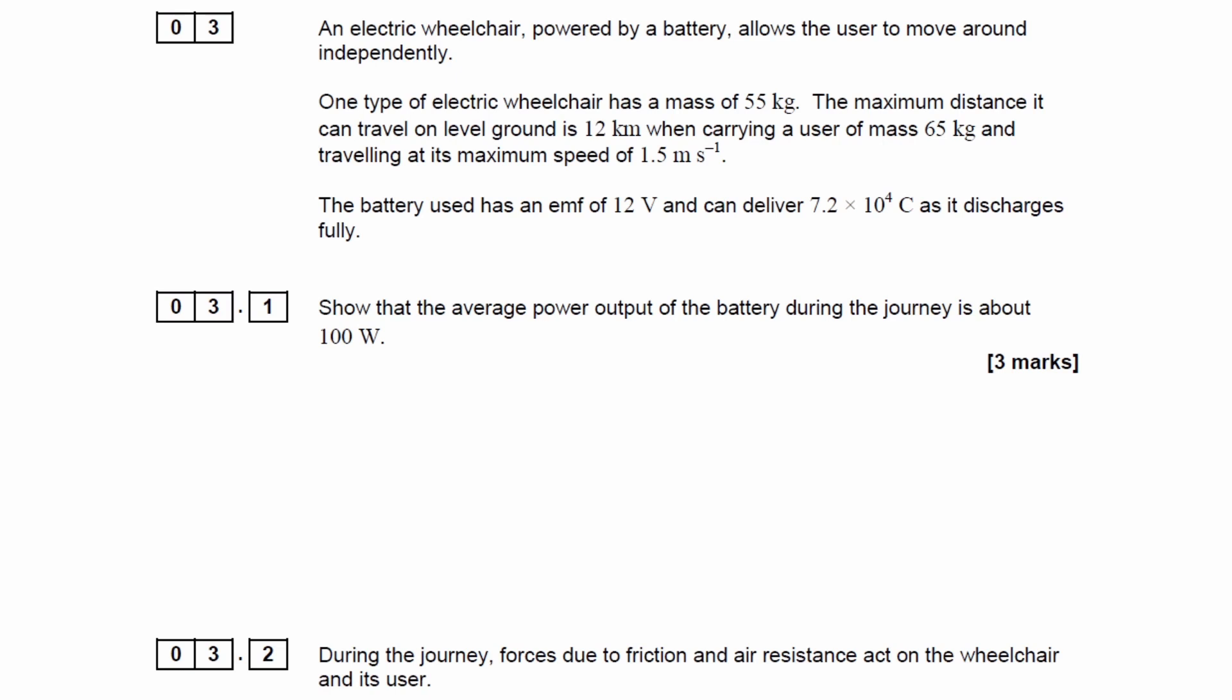We have an electric wheelchair powered by a battery that allows the user to move around independently. One type of electric wheelchair has a mass of 55 kilograms. The maximum distance it can travel on level ground is 12 kilometers when carrying a user of mass 65 kilograms and traveling at a maximum speed of 1.5 meters per second.